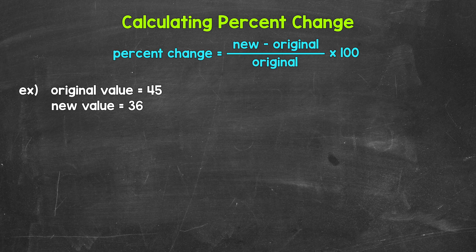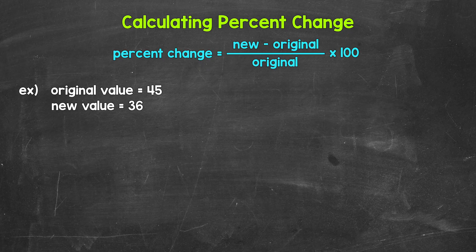Now to calculate percent change, we can take the new value and subtract the original value. That gives us the amount of change — the amount of increase or decrease. Then we divide that result by the original value. Always divide by the original value, because we are finding the percent change from that original value. That's going to give us a decimal. We then multiply that decimal by 100 to convert it to a percent.